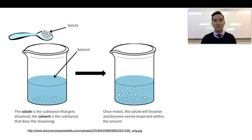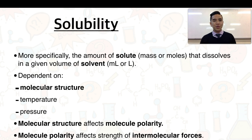There are other examples of mixtures but these are some of the more common types of mixtures that we'll be dealing with. To be a little bit more detailed, solubility can be thought of in a quantitative way. More specifically, the amount of solute, in the form of mass or moles, that can dissolve in a given volume of solvent.